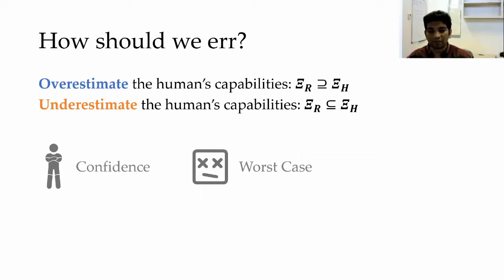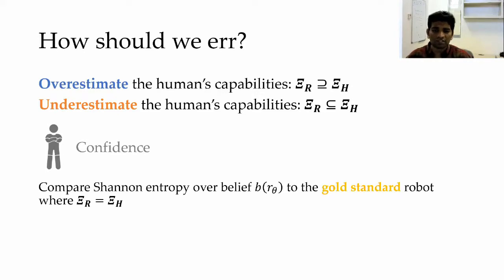Overall, what we want the robot to do is extract what the human wants from their demonstrations. So let's see how either overestimating or underestimating affects the robot's confidence. And then we can also examine the worst case scenario in each case. So what is confidence in our problem setting? Since we are trying to compare what happens when the robot overestimates or underestimates the human's capabilities, we decided to define confidence as a comparison of the Shannon entropy of the belief to the gold standard robot.